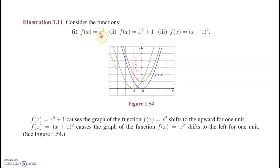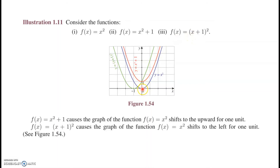In Illustration 1.11, f(x) = x² is the blue original curve. x²+1 is a translation — adding 1 shifts it upward by 1 unit along the y-axis, shown by the red curve. In the last case, f(x) = (x+1)², where x is added to 1 inside the function, the graph shifts to the left.